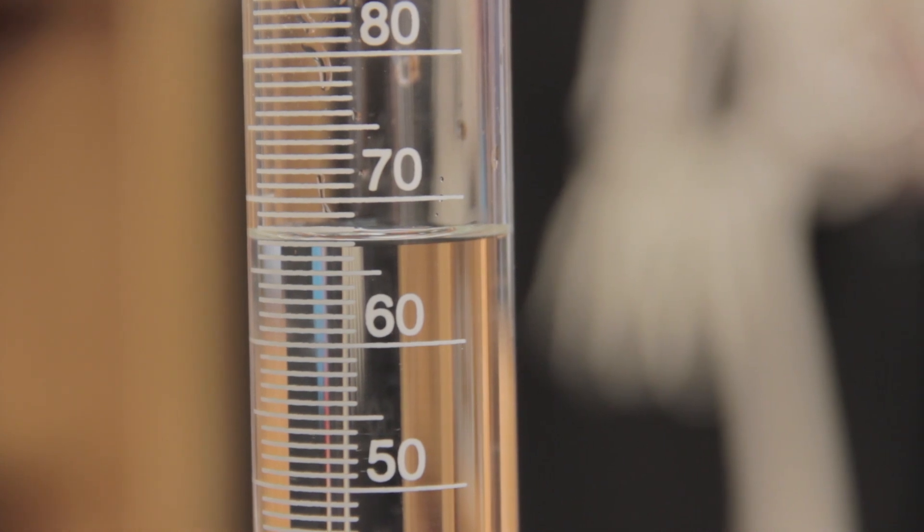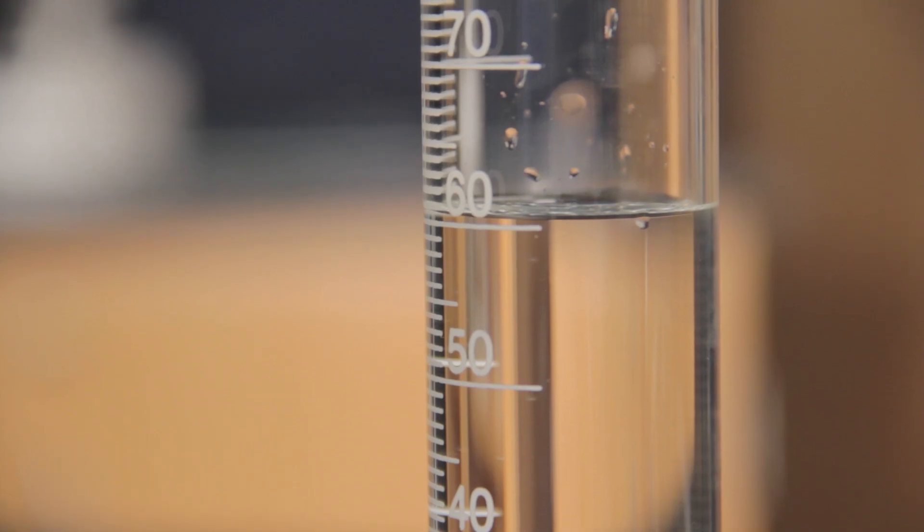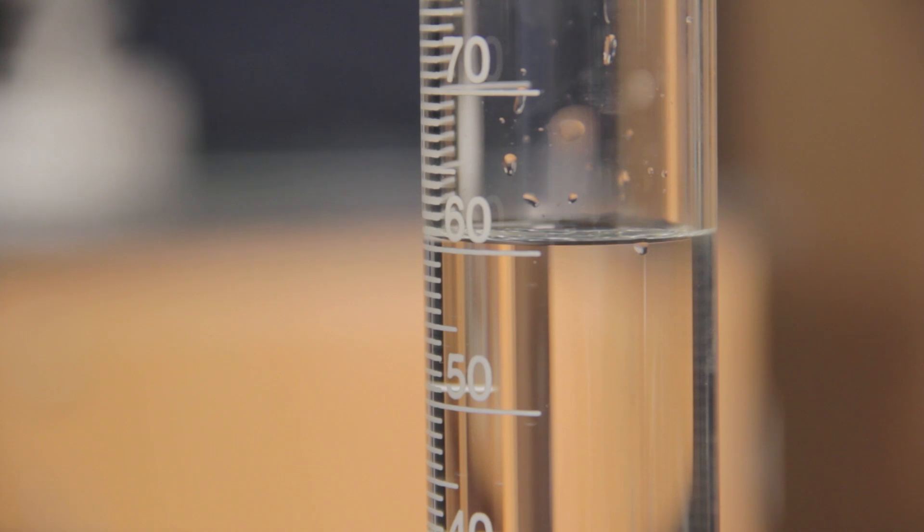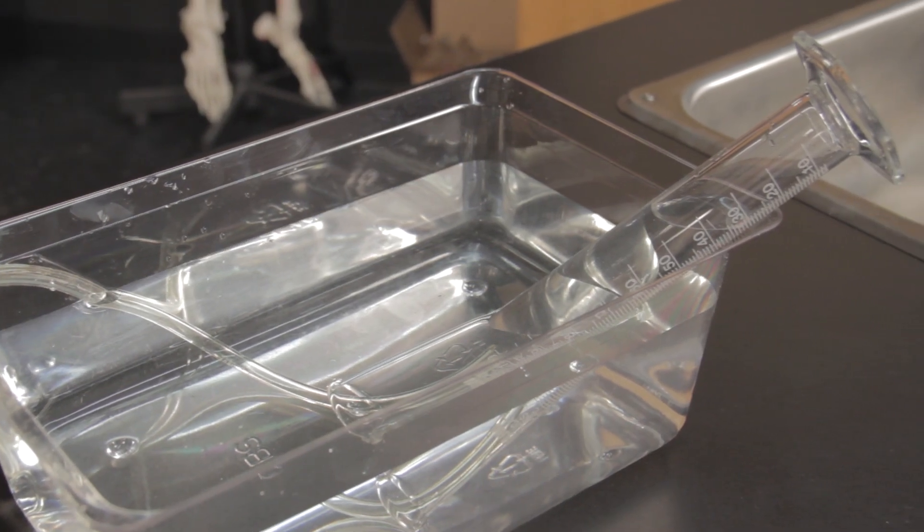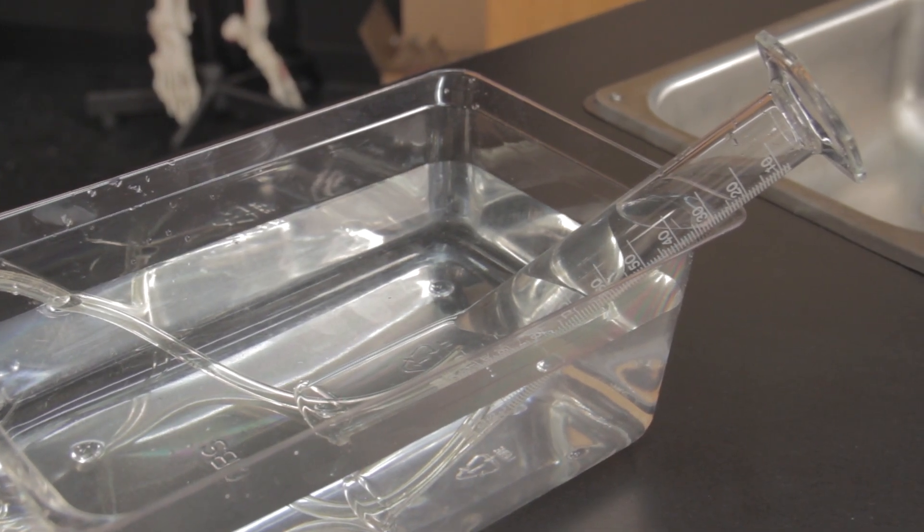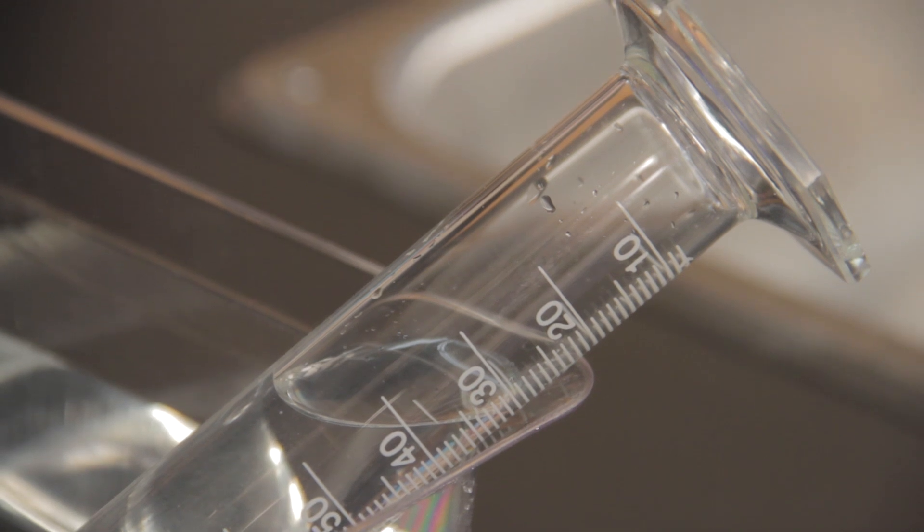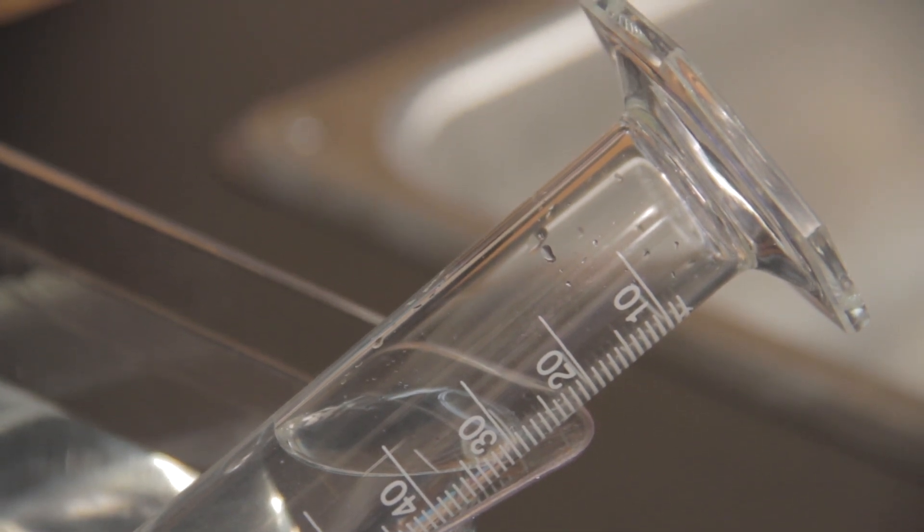In a graduated cylinder, the bottom of the meniscus, a curve that forms at the top of the liquid column, indicates the volume of the liquid. Graduated cylinders are also able to measure gases by inverting a graduated cylinder filled with water and submerging its opening in water.